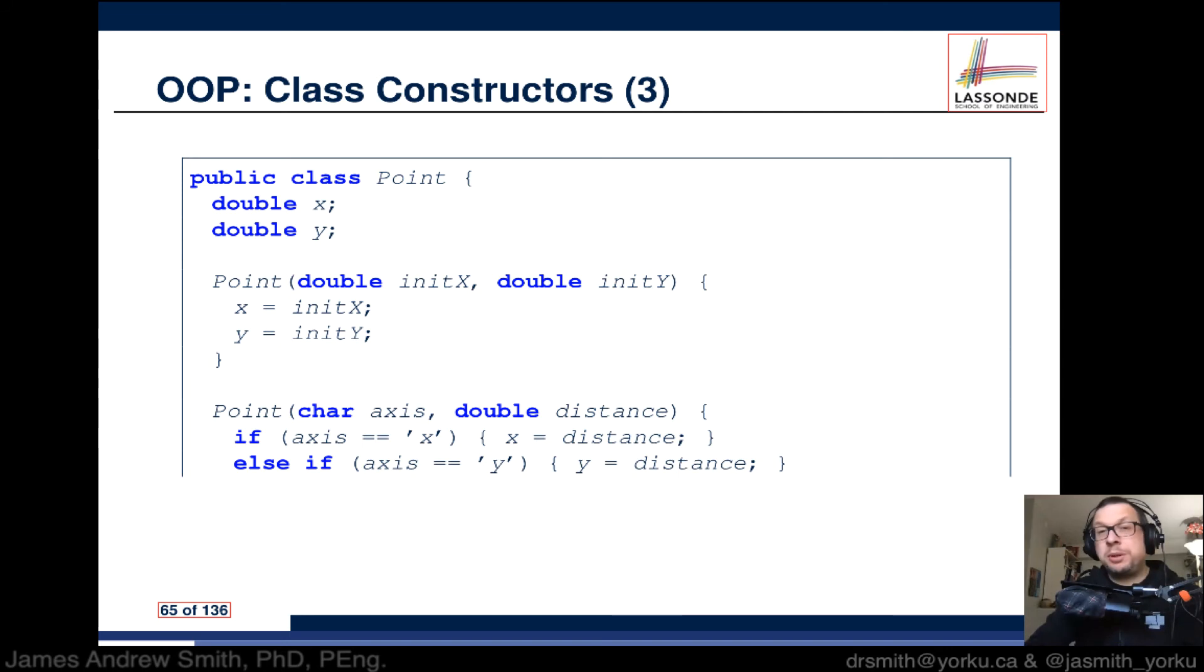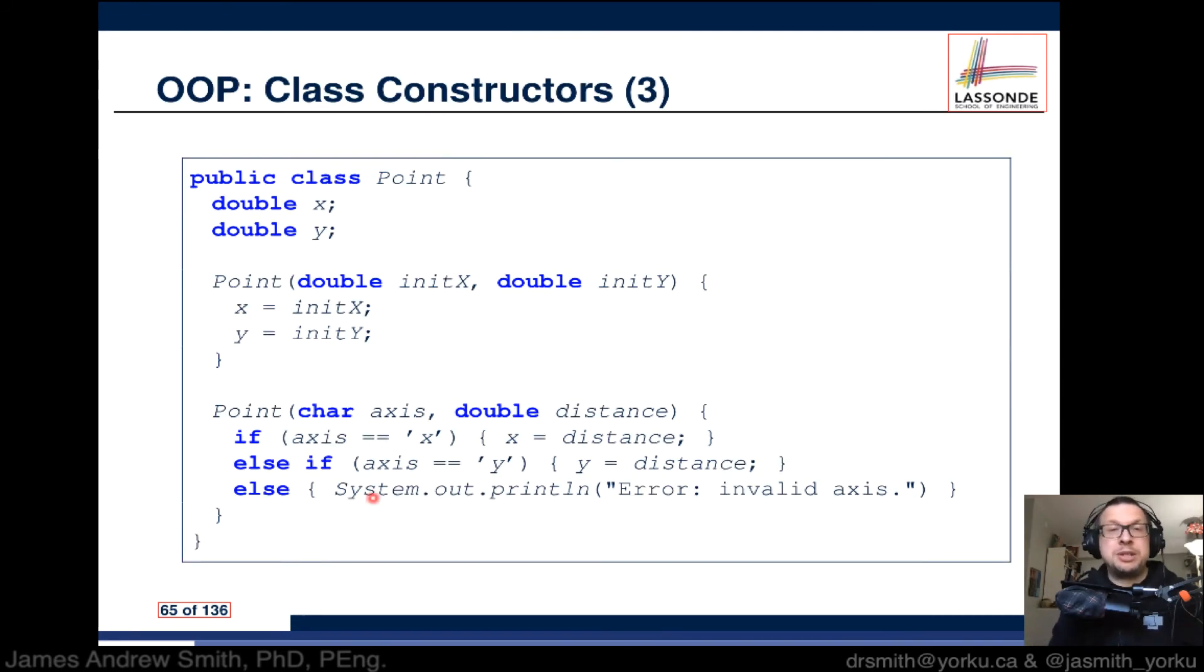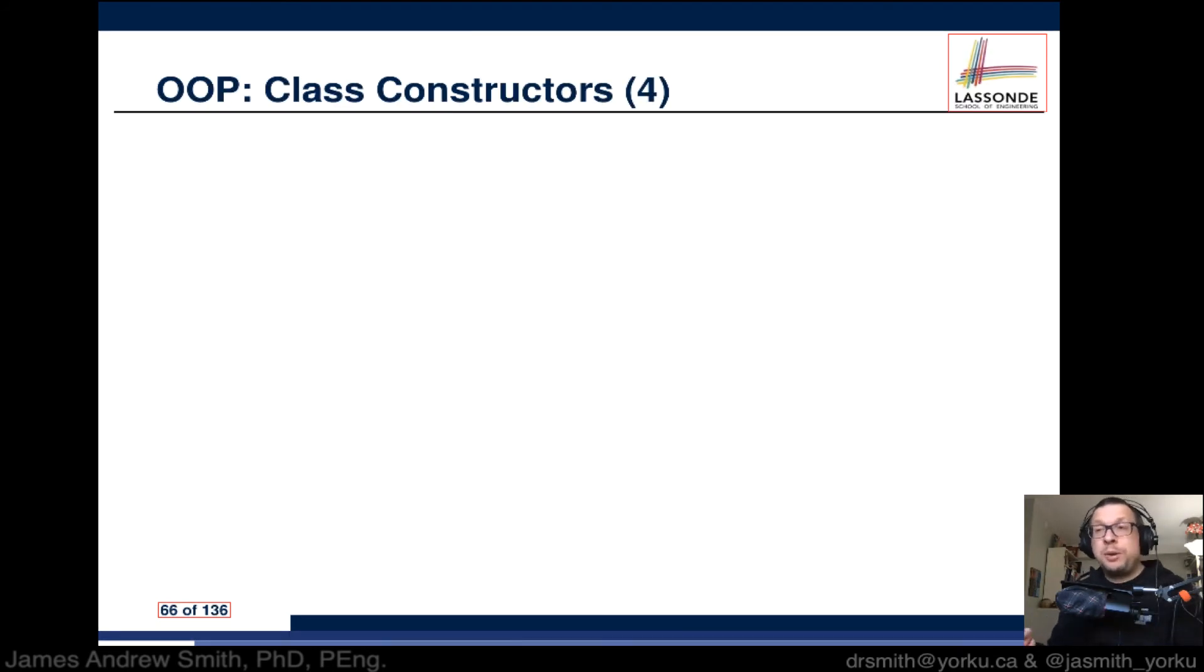And if we said z or something like that, we say oh no, there was an error right there. That'd be another constructor. So we can have different types of constructors, different ways of setting up an object.